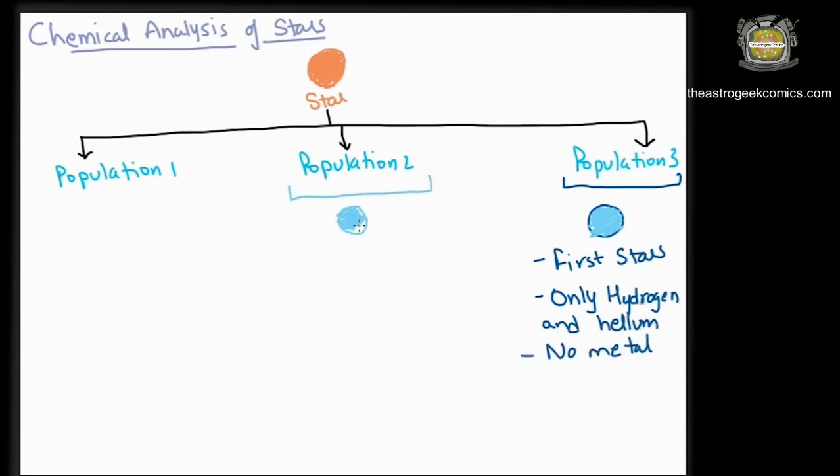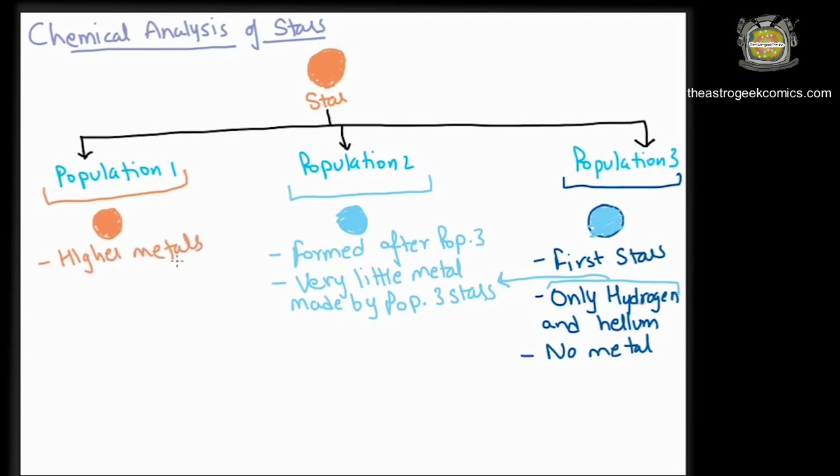Population 2 stars formed from the nebulae in which the Population 3 stars burst, and some of the metals created by the Population 3 stars are present in the Population 2 stars. Population 1 stars are metal-rich stars that have comparably high amount of metals. In astronomy, everything higher than helium in the periodic table is usually referred to as a metal.